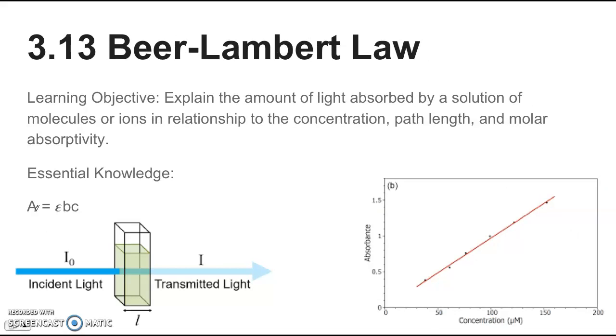Next we have 3.13, that's Beer-Lambert Law. The learning objective is to explain the amount of light absorbed by a solution of molecules or ions in relationship to the concentration, path length, and molar absorptivity. The essential knowledge is working with this equation right here. This is the Beer-Lambert Law.